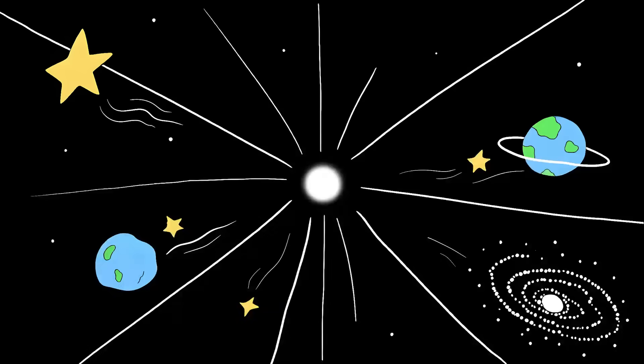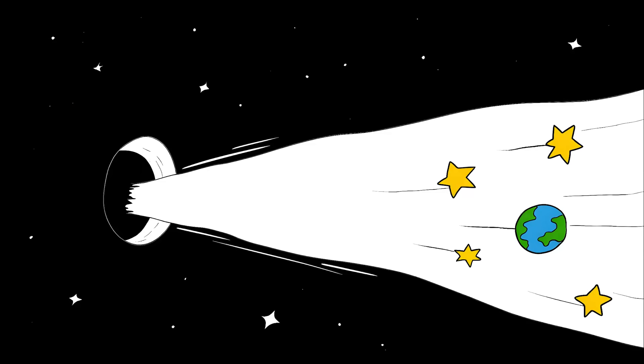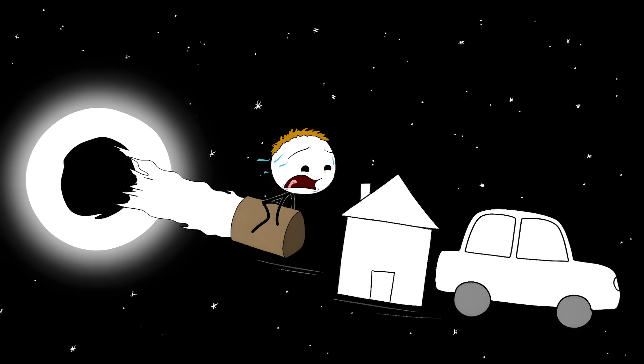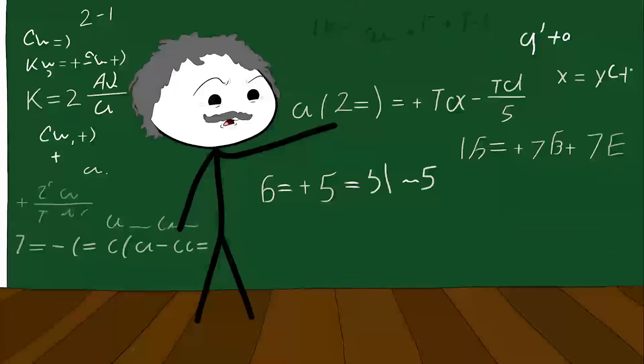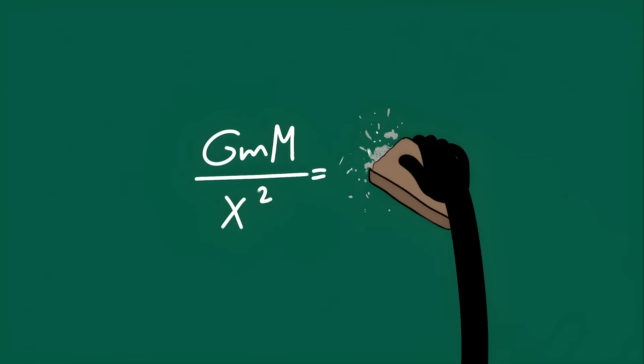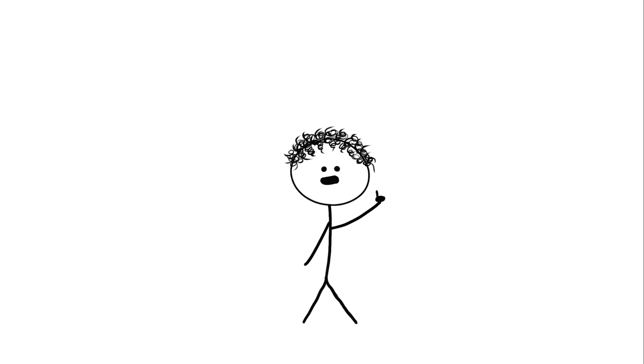Number two: white holes. White holes are like black holes in reverse, a cosmic fire hose blasting matter and energy into space instead of sucking everything in. According to Einstein's equations, the same ones that predicted black holes, white holes should exist. They're what you get when you run the math of a black hole backwards. But white holes break one of the most fundamental rules of the universe.